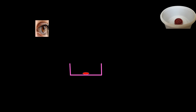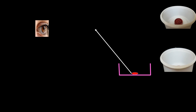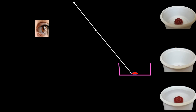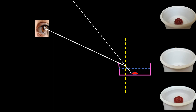Now we are going to understand the tub and coin activity. In the first situation, the ray of light originating from the coin reaches the eye. In the second situation, due to moving the tub away from the eye, the ray of light originating from the coin does not reach the eye, so the coin does not appear. In the final situation, we fill the tub with water. The ray of light originating from the coin bends away from the normal and reaches the eye due to refraction, so the coin appears.